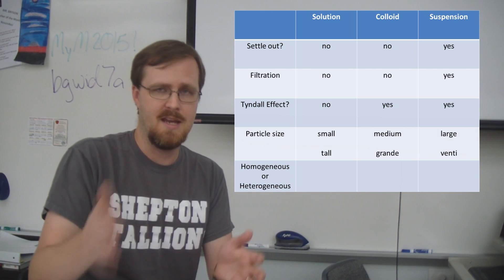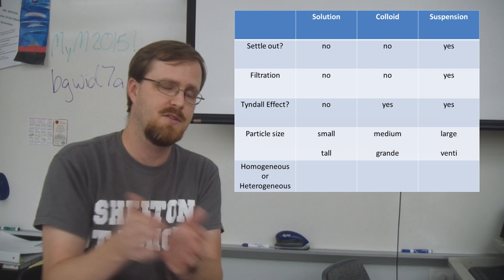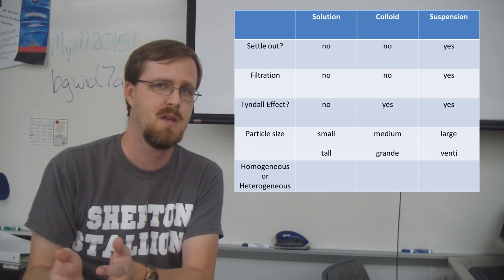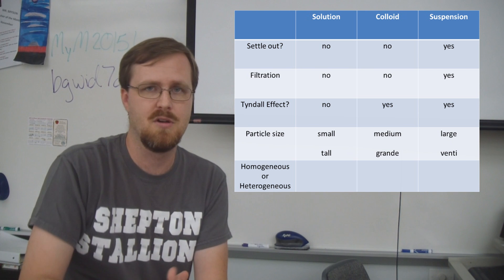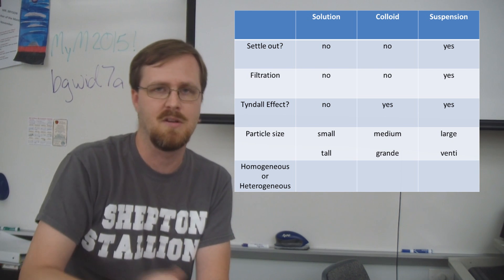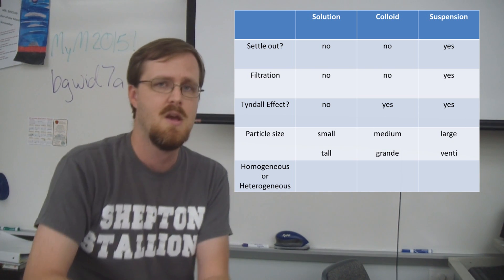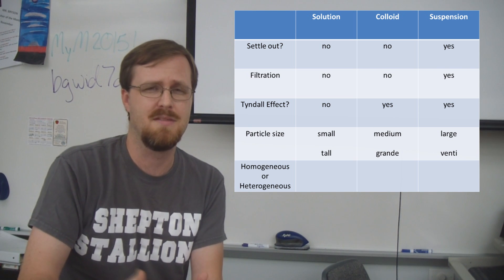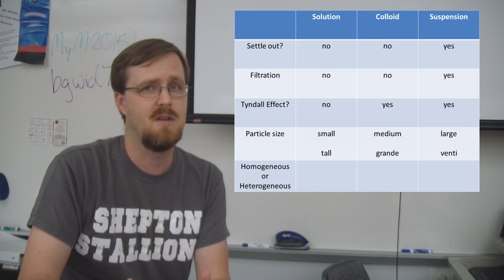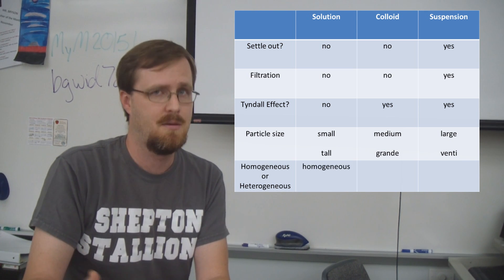Okay, so if I were to take any solution and take five different samples of that solution, like say, like Kool-Aid, right? So you pour yourself a big, tall pitcher of Kool-Aid and you pour out five different glasses of that for all of your friends. Well, each of those five different glasses is basically going to be the same thing. So that means solutions would be homogenous.